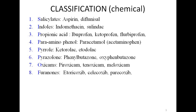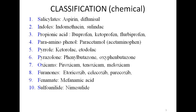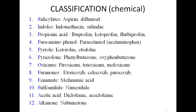Etoricoxib, celecoxib, and parecoxib are the COX-2 selective group. We have one drug under the fenamate group, namely mefenamic acid. Nimesulide is a sulfonanilide. Diclofenac and aceclofenac are acetic acid derivatives. Nabumetone is an alkanone. Finally, we have a benzoxazocine derivative, which is nefopam. As you can see, the chemical classification is quite extensive.